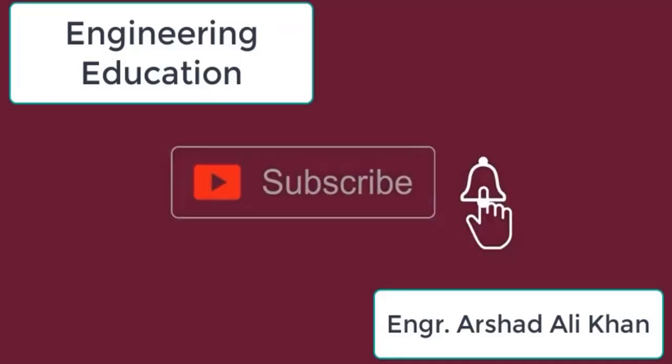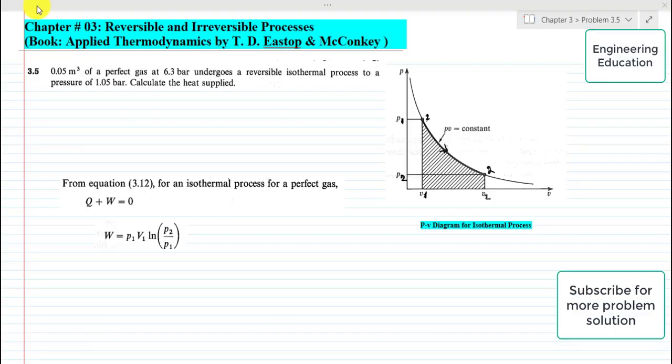Hello students, welcome to my channel Engineering Education. Please subscribe to my channel. In this video we are going to solve problem 3.5, chapter number three, Reversible and Irreversible Processes from the book Applied Thermodynamics by Eastop and McConkey.